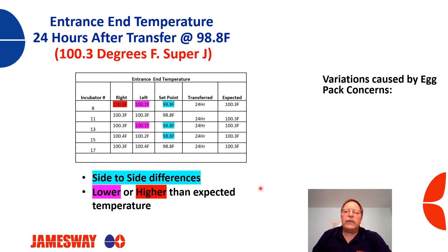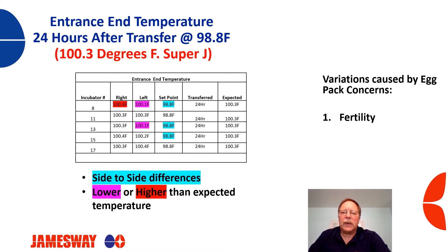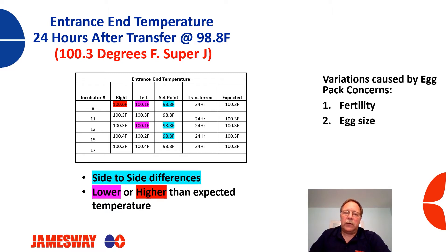So if we have any variations — side to side, lower, or higher than expected — what are some of the things that can cause that? Looking at egg pack, we can have fertility issues which would create side-to-side differences. Egg size can also create an issue; if we have larger or smaller eggs, you could end up with higher or lower than expected temperatures or side-to-side differences.